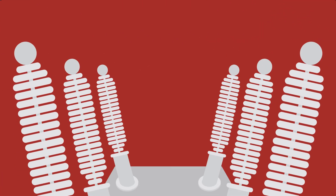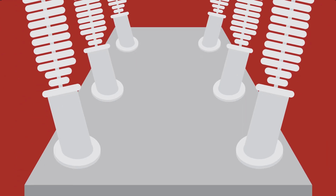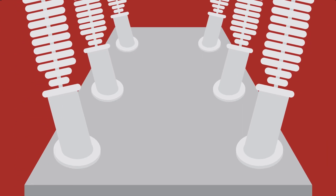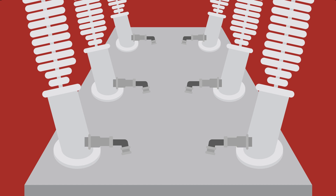The Sum of Currents method requires a current input from each phase of the high and low side bushings to be monitored. This is the most standard configuration and easily retrofitted for legacy transformers.